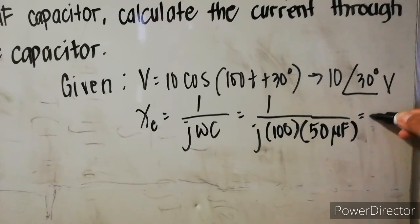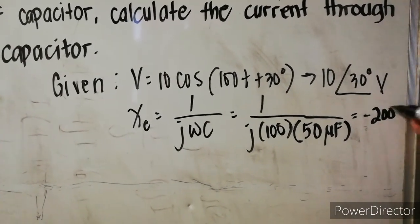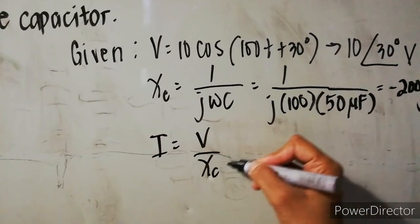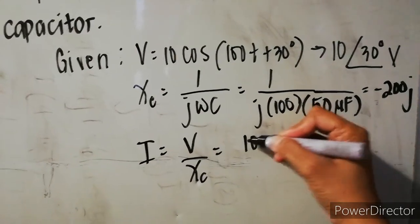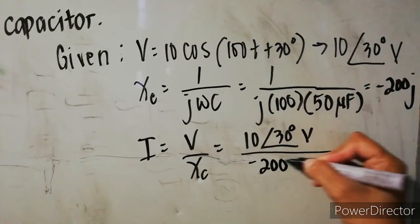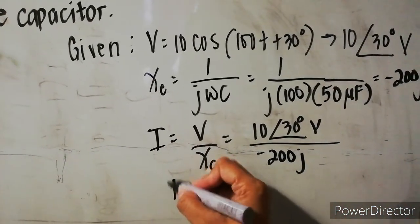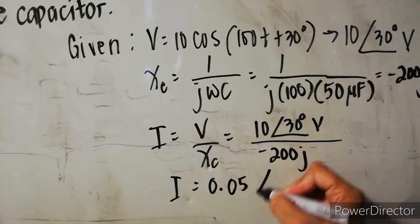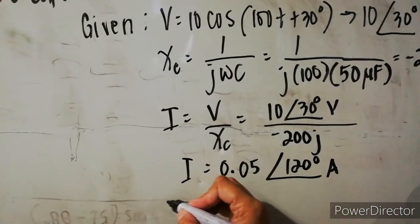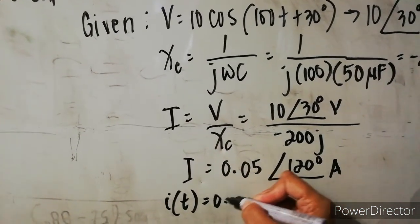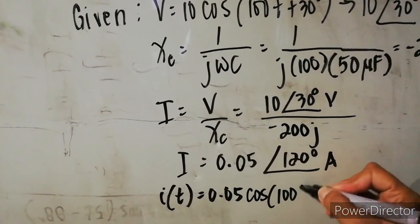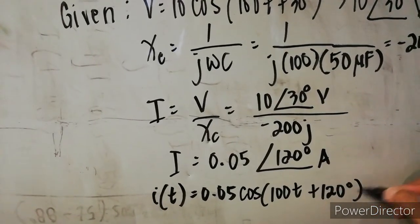The capacitive reactance equals negative j200 ohms. Solving for the current: V over X sub C equals 10 angle 30 degrees divided by negative j200, giving a current of 0.05 angle 120 degrees amperes. In time domain form, i of t is equal to 0.05 cosine of 100t plus 120 degrees amperes.